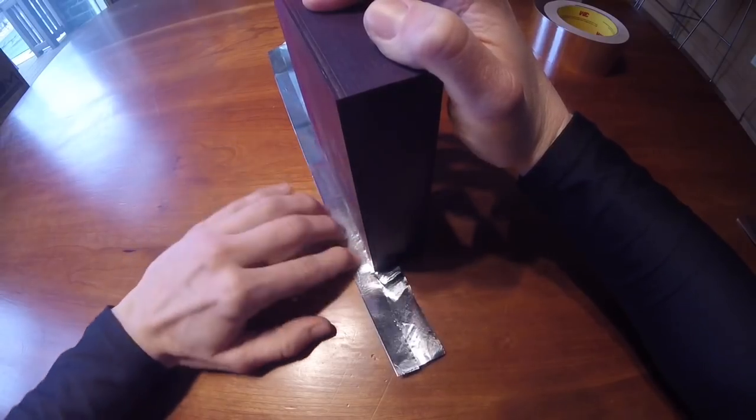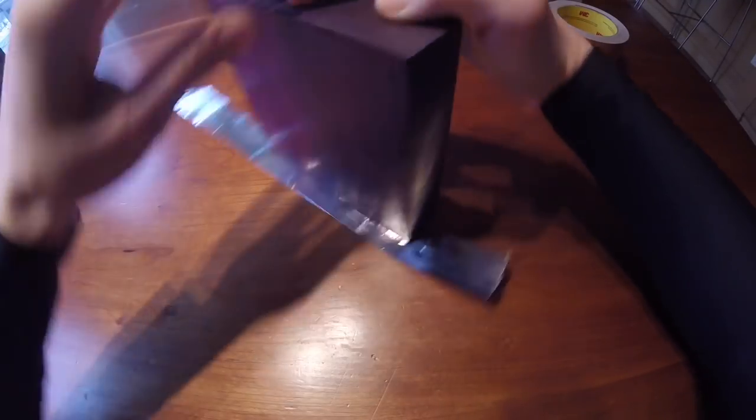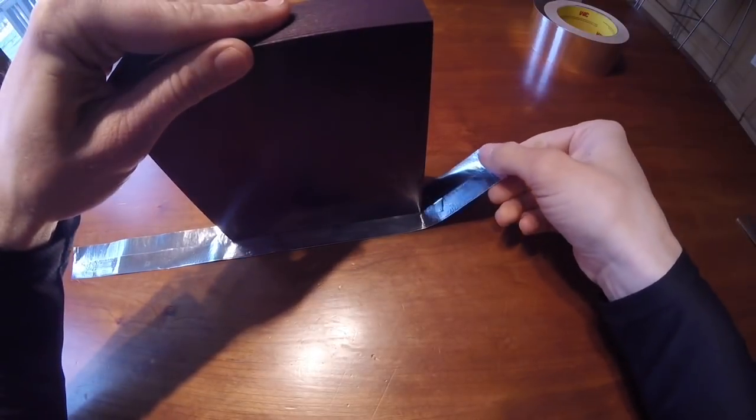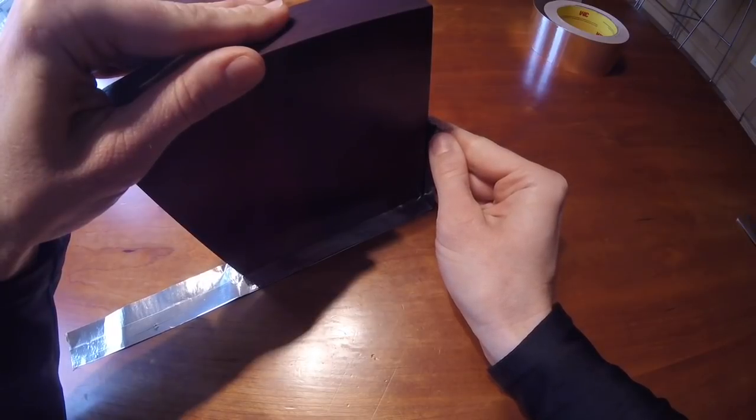For the corners I like to use my work surface so I'll turn the wood panel on its side. This helps create a clean 90 degree angle and we're going to do the same thing as before and line up the tape.